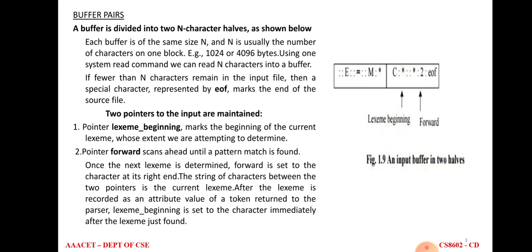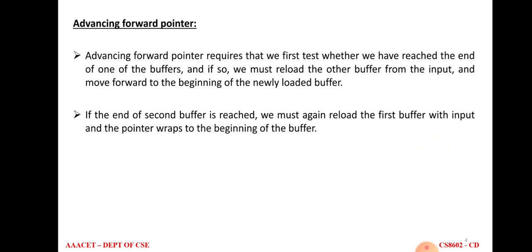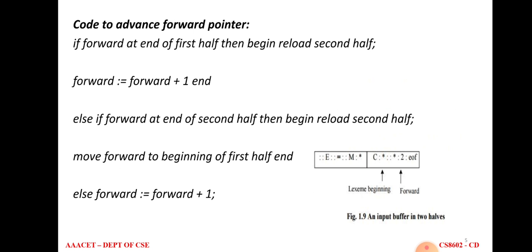The forward pointer moves from one cell to another cell until it finds a well-formed token. At the end of the buffer, there is an EOF — end of file — which is the sentinel character used to indicate the end of the source file. The forward pointer moves from left to right to identify the tokens, and there is one algorithm for doing this.